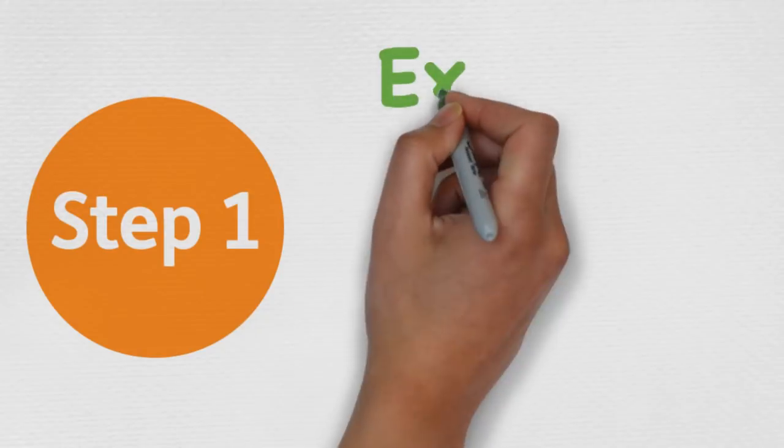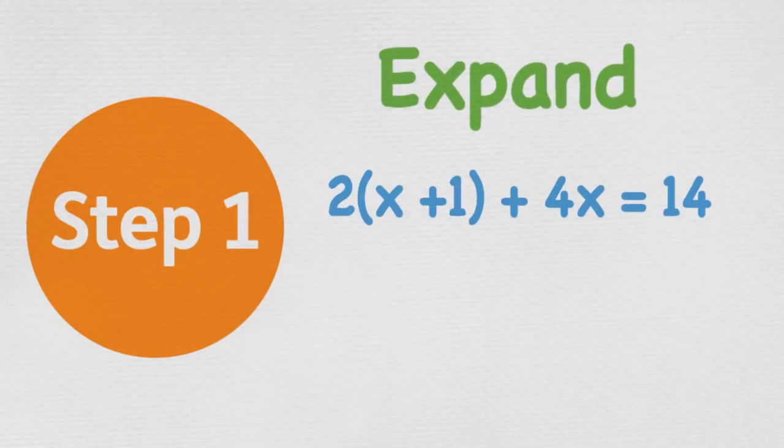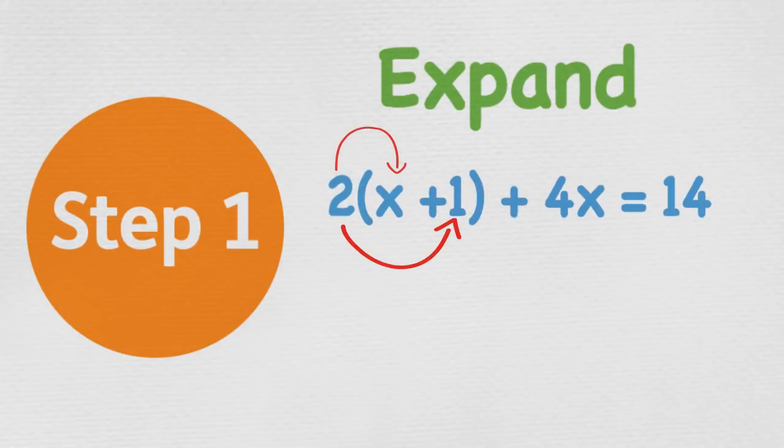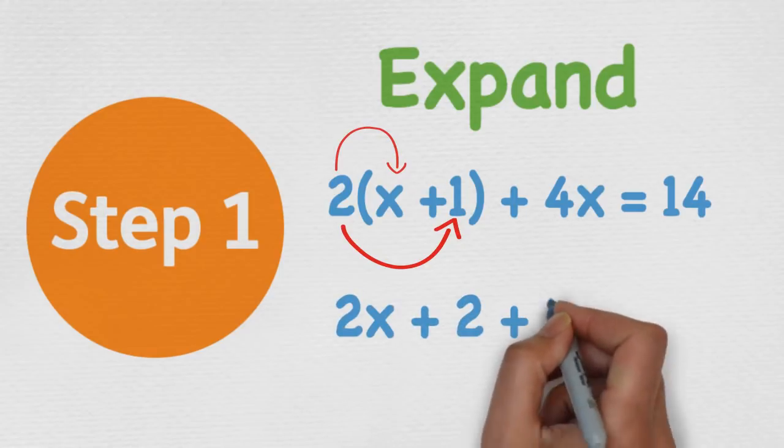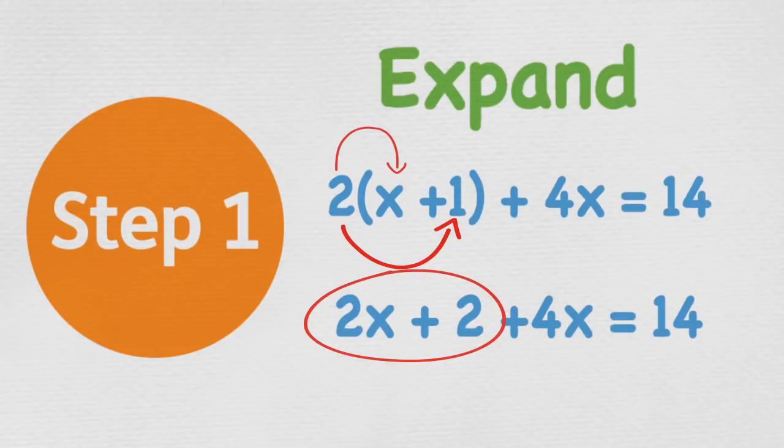Step one, expand. Before we can do anything, we need to expand the brackets. As you can see, the 2 is in front of the brackets so we need to multiply everything inside the brackets by 2. So 2 times x which equals 2x and 2 times 1 which equals 2. So what we are left with after expanding is 2x + 2 which has come from expanding the brackets plus 4x which was already in the equation before equals 14.